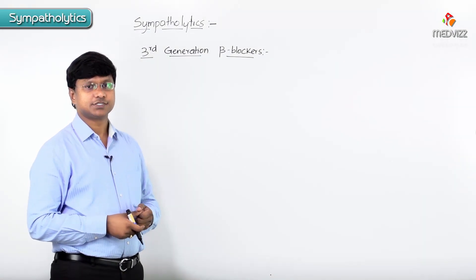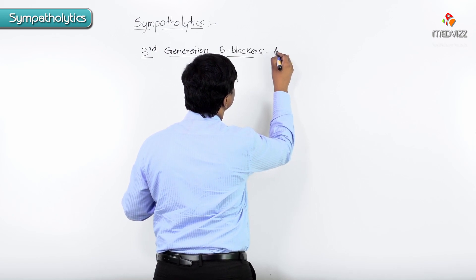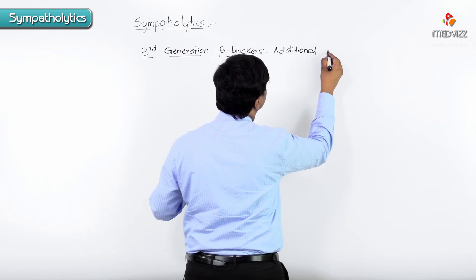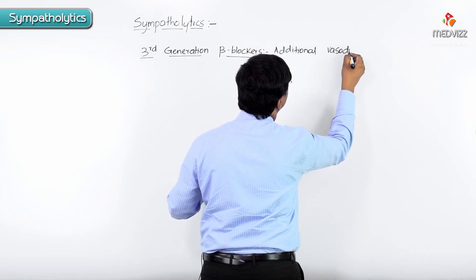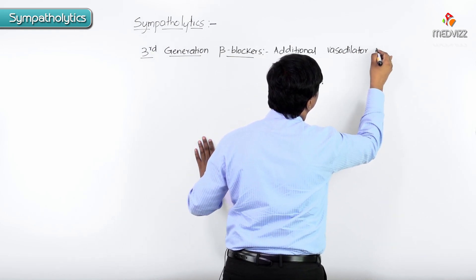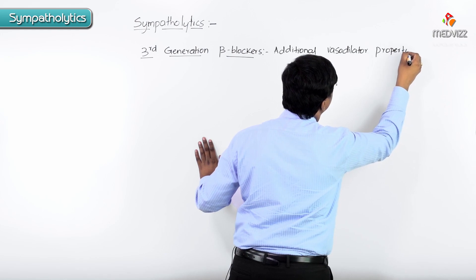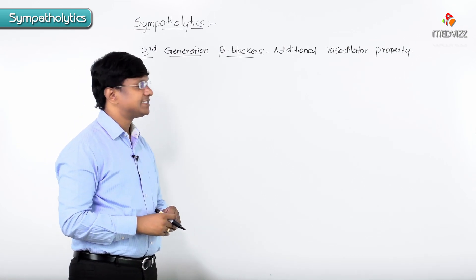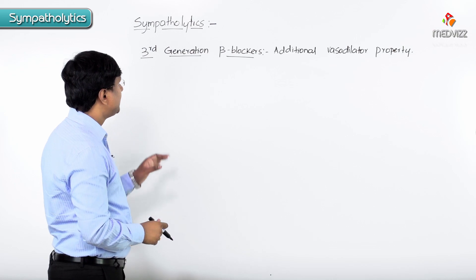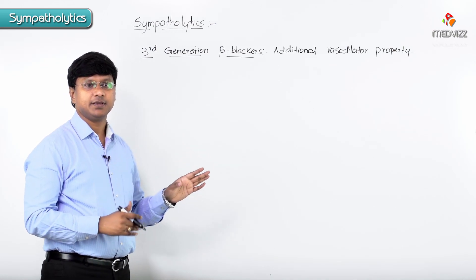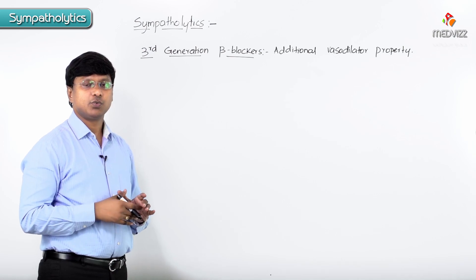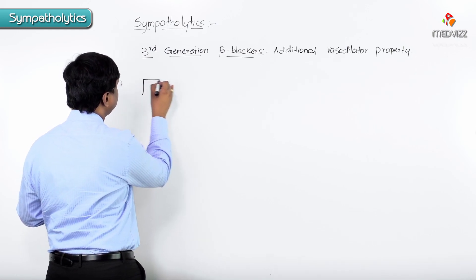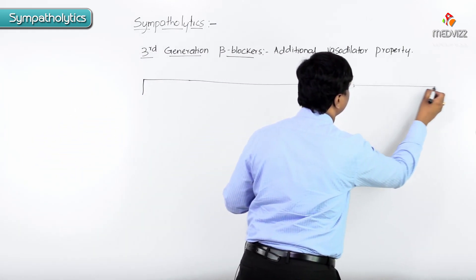Third generation beta blockers have an additional vasodilator property. Let me discuss how they have this additional vasodilator property — it is via multiple mechanisms. Let me tell you what are the groups of drugs under this category.